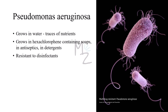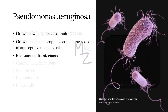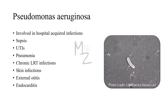Pseudomonas aeruginosa is a motile bacterium because it has flagella. It is multi-drug resistant and is involved in many hospital-acquired infections like ventilator-associated pneumonia. It can also cause sepsis, upper respiratory tract infections, and pneumonia in patients with lowered host defenses, as well as chronic lower respiratory tract infections in patients with cystic fibrosis, wound infections, and infections in burn patients.